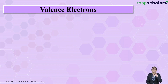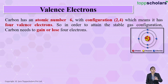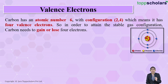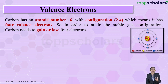Now let us focus on carbon. The atomic number of carbon is 6, so its electronic configuration is 2, 4. The number of electrons in the outermost shell of carbon is four, which means carbon is unstable — it does not have a complete octet. Carbon can either gain four electrons to reach the octet state, or lose four electrons to reach the duplet state.